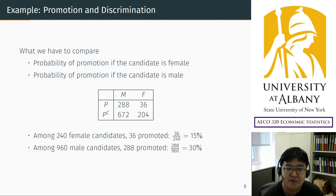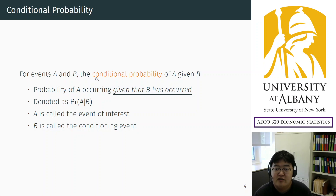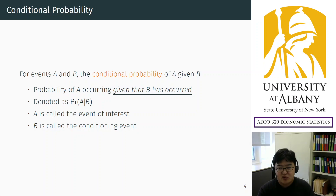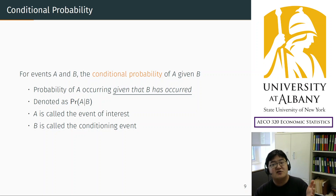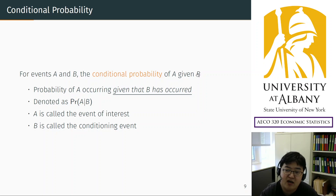This is the idea of conditional probability. We consider two events, A and B. When we define conditional probability, we need at least two events. One is the main event we are interested in — like in our example, A is promotion. We are interested in the probability of promotion. But there is a condition: we would like to put a condition when we calculate the probability of promotion, which is gender — whether female or male. So B in our example is male or female. We call this the conditional probability of A given B.